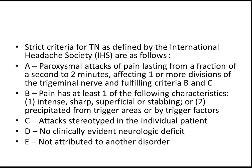B — pain has at least one of the following characteristics: either it is intense, sharp, superficial, or stabbing; or it is precipitated from trigger areas or by trigger factors. C — attacks stereotyped in the individual patient. D — no clinically evident neurological deficit. Patients suffering from trigeminal neuralgia do not have any sensory defect; sensory function is very normal in these patients. This is one of the things you need to remember to differentiate it from other neurological problems. E — not attributed to another disorder.